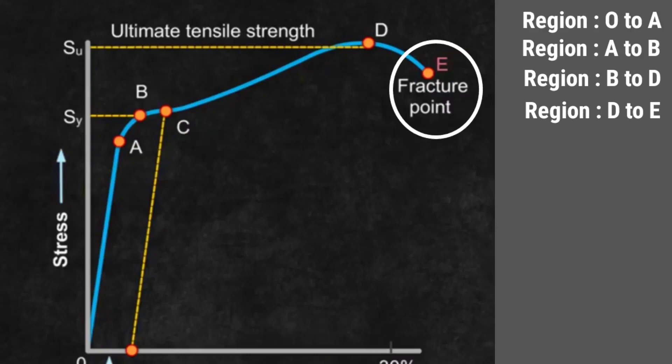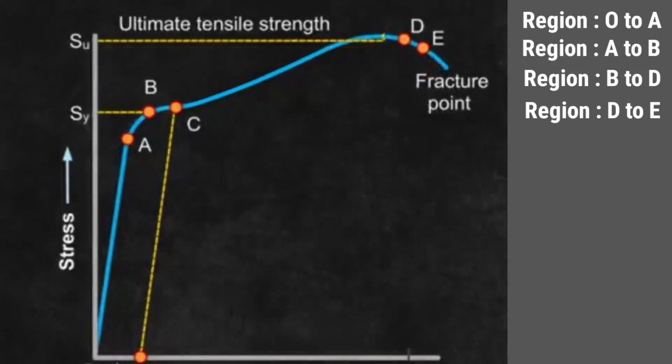If points D and E are very close, then the material is said to be brittle. Examples are glass, antimony, bismuth, etc.